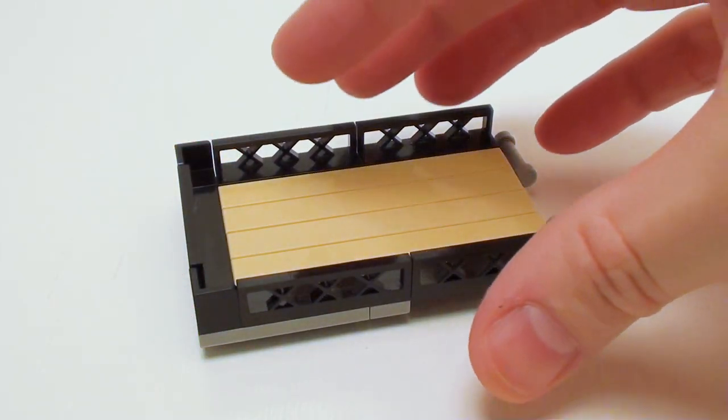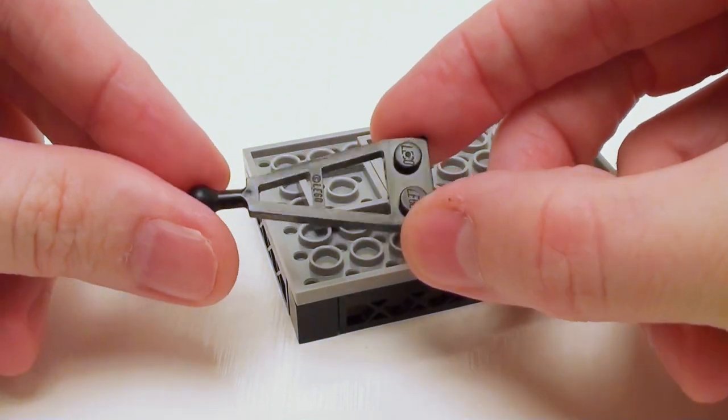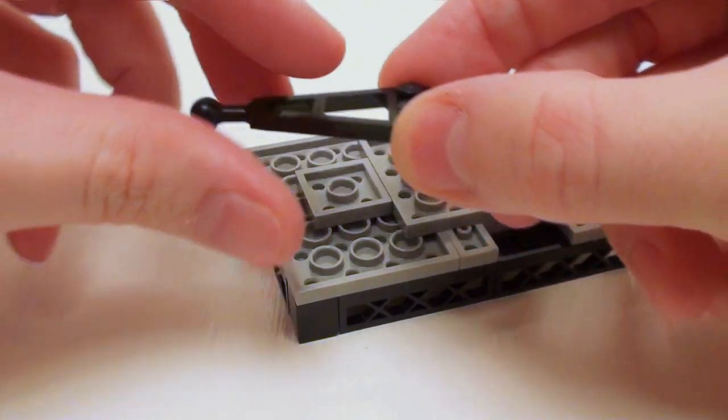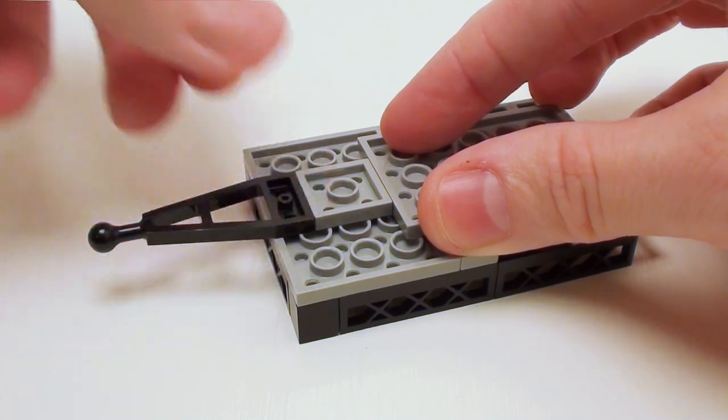Let's flip the bed over. Now in this area, let's take a 1 by 2 modified plate with a ball bearing attachment. Place it right here as shown.